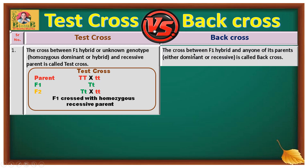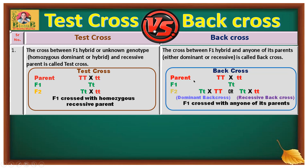Coming to back cross: the cross between F1 hybrid and any one of its parents, either dominant or recessive, is called a back cross. Here also you can see two pure line parents — when crossed, an F1 generation hybrid is obtained. When this F1 hybrid is crossed with the dominant or with the recessive parent, that type of cross is called a back cross.